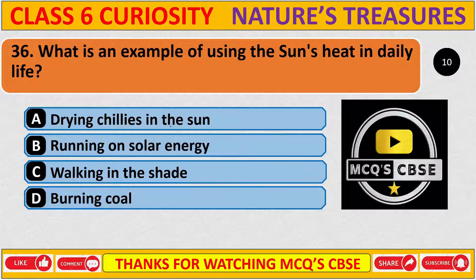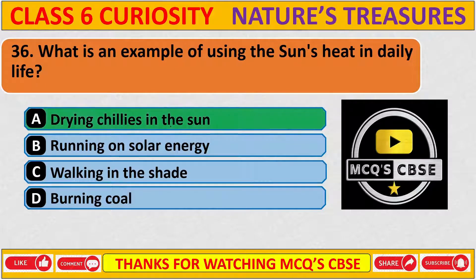What is an example of using the sun's heat in daily life? The correct answer is A: Drying chilies in the sun.